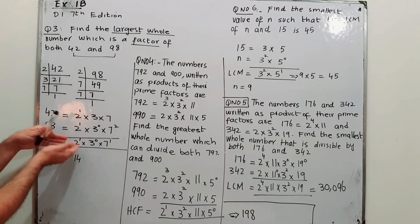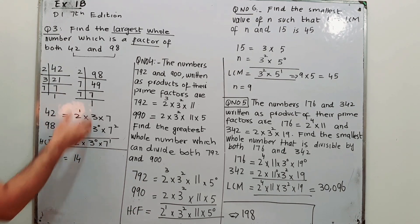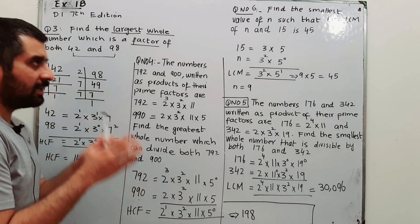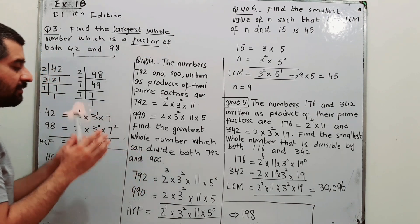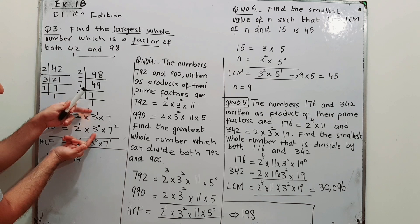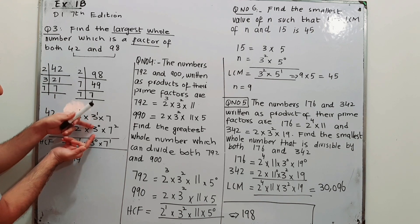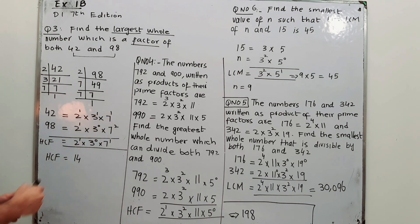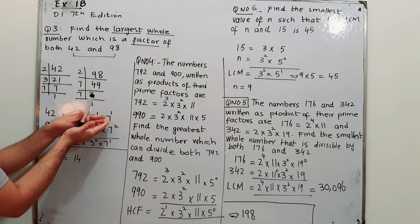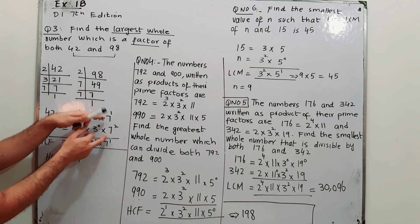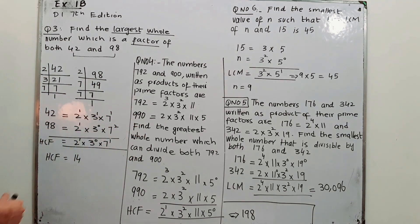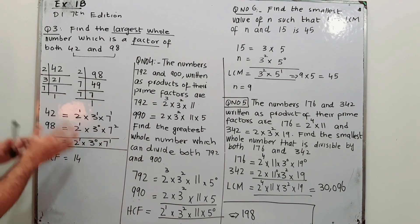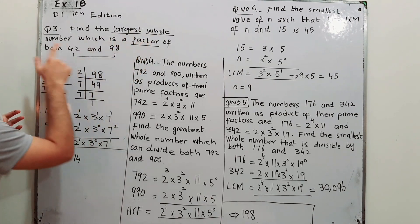From the column of 3 you have 3¹ and 3⁰. For HCF, take out the lower power, which is 3⁰. For the column of 7, you have 7¹ and 7² — take the lower power, 7¹. Now 3⁰ = 1, so the HCF is 2 × 7 = 14. So 14 is the largest whole number which is a factor of both 42 and 98.